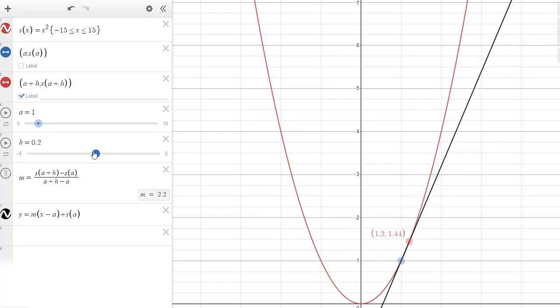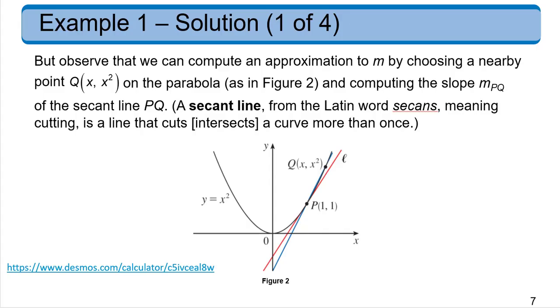So if we had to guess, what would we think the slope would be at that point? It seems pretty obvious that it should be 2. And in fact, that is what it is.